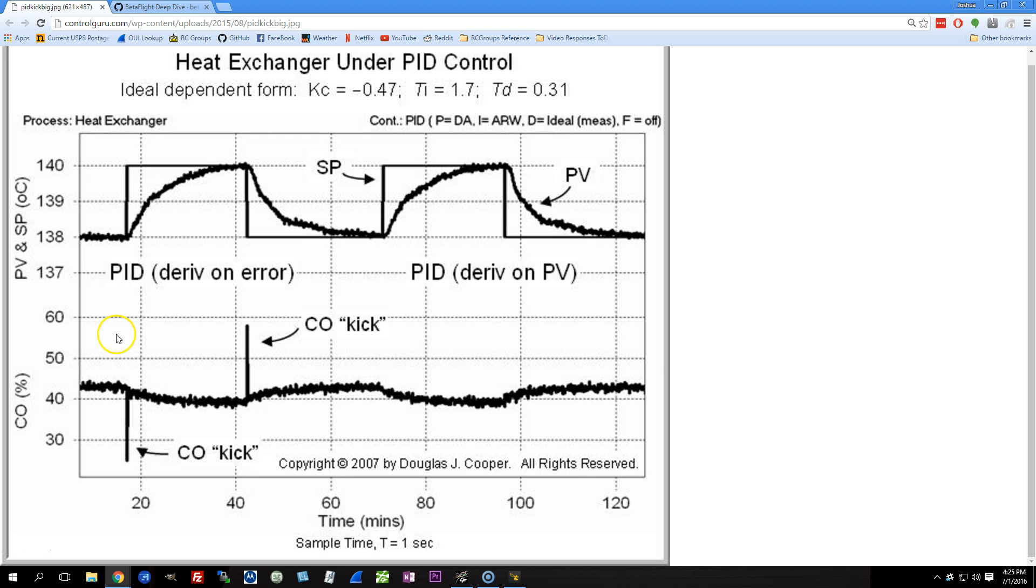So, if we take a look at this graph, in this case, the D term is being based on the error, which means that when the error changes rapidly, the D term will be large, and when the error changes slowly, the D term will be small. And, of course, when the error is not changing at all, the D term will be zero.